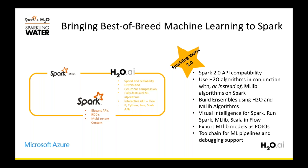The benefits of Sparkling Water: you can use H2O algorithms in conjunction with Spark MLlib algorithms, building pipelines that go back and forth between the two. You can build ensemble models using both H2O and MLlib algorithms as candidate models. You can use MLlib algorithms inside H2O Flow — for example, using an SVM from H2O Flow just like any other H2O algorithm. All MLlib models ported over can also be exported as POJOs for inference and scoring.